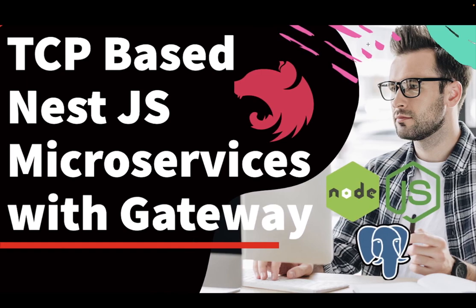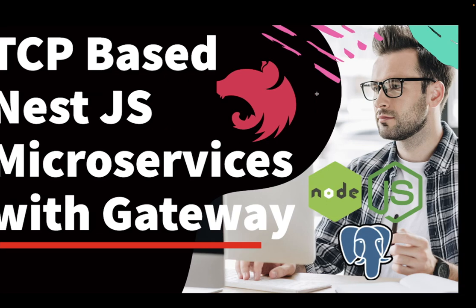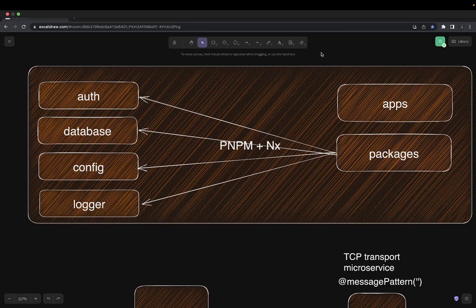My initial idea is to cover TCP-based microservices, then gRPC, and then we can also include Kafka and RabbitMQ as transports. All these services are going to be built with a gateway. I will talk about the architecture — what we are going to build — and we are going to build the same example with these different transports: TCP, gRPC, or Kafka.